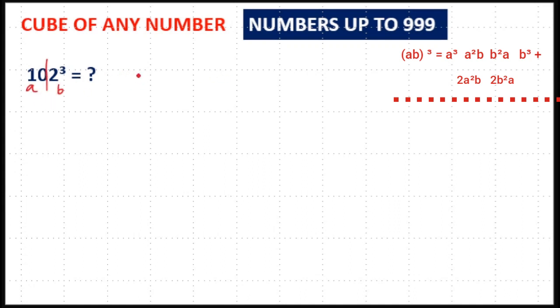So, 10 square is equal to, 10 cube is equal to 1000. 2 cube is equal to 8.